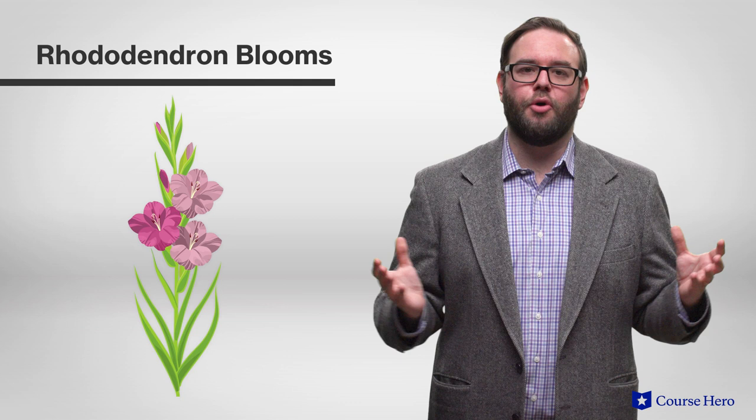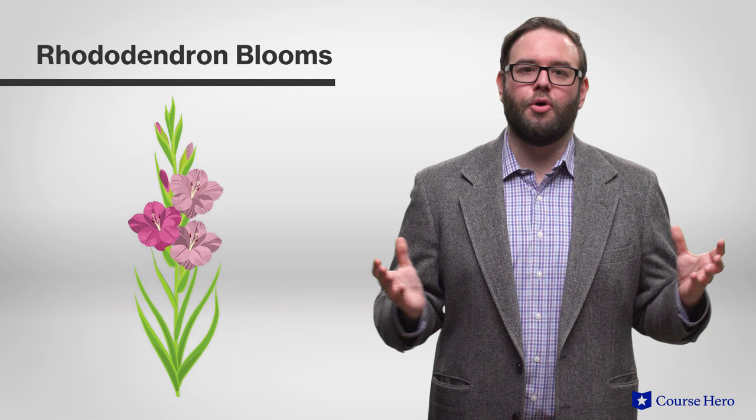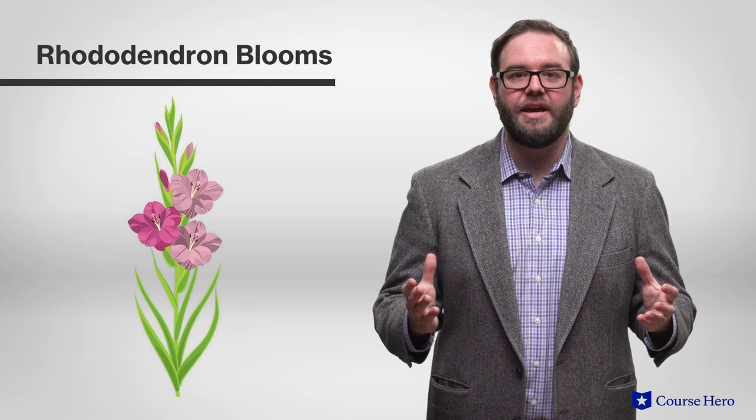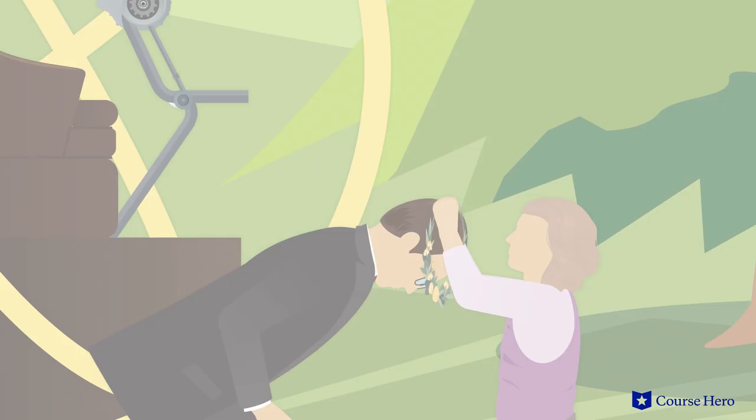First there are the mauve and purple rhododendron blooms the time traveler notices when he first lands on the little lawn, symbolic of a link to his present world. The Eloi connection with flowers is very strong.